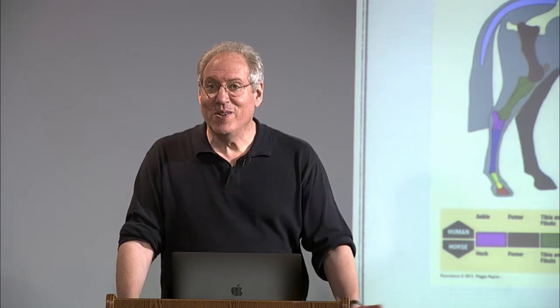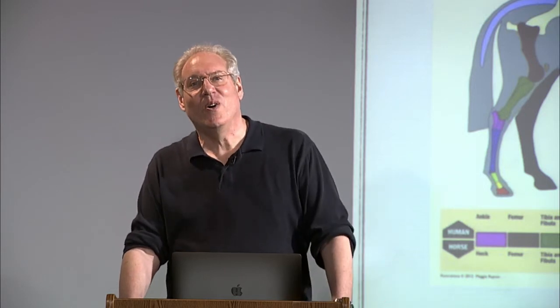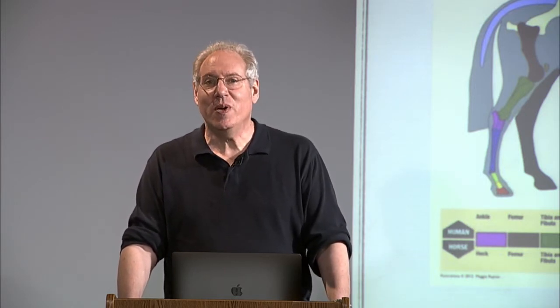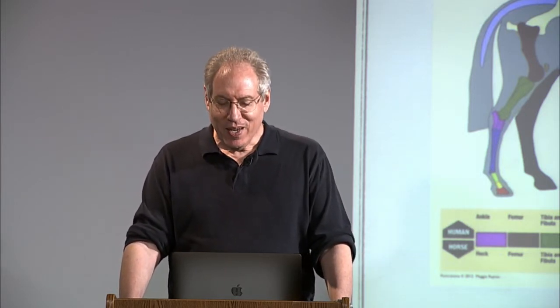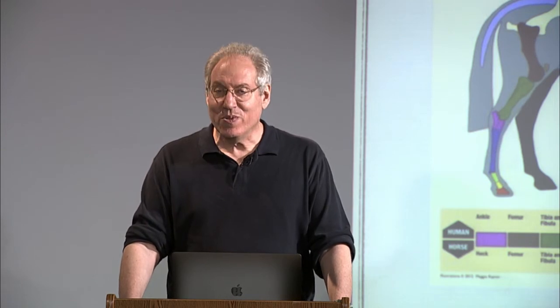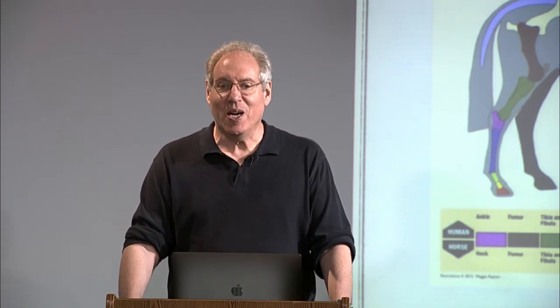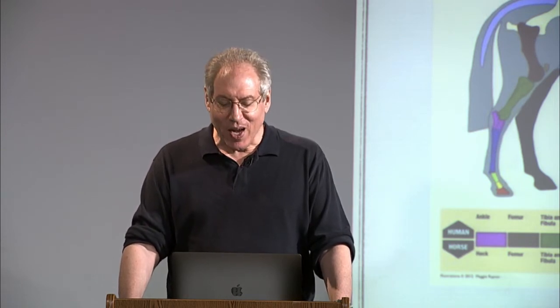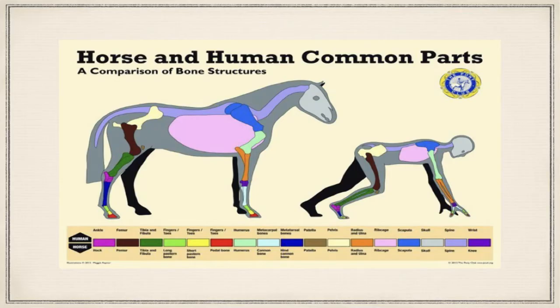I found this actually on a horse breeding website. It's not just a few bones we have in common — it's quite a lot of bones and organs, as you can see from the color coding. This is because we have a common ancestor.